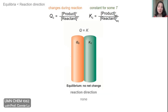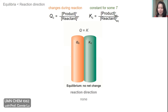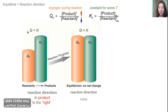The value of Q can tell you something about the reaction direction if you know the specific value of K. Q can change during the reaction, but K is always constant for a particular reaction at a specific temperature. When Q equals K, the system is at equilibrium and there is no net change. If Q is less than K, the reaction direction will be towards products, or to the right.